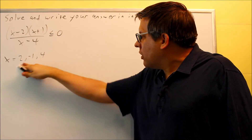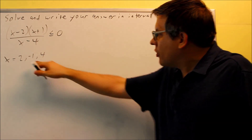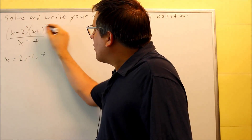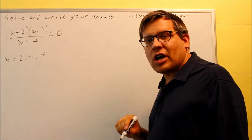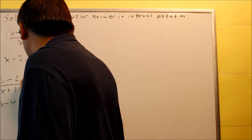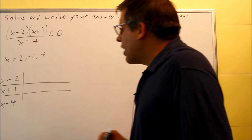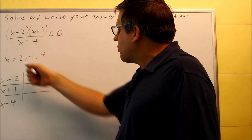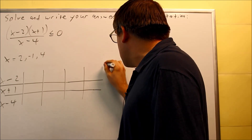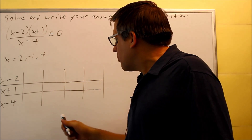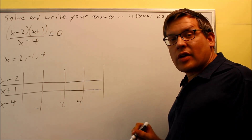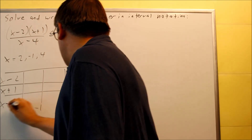It doesn't matter if it makes the top zero or the bottom zero — you're going to include all of them. This tells us what numbers we're going to put on our table, and these would also be the same numbers we'd put on our number line. For the table method, we put any factor you see — top or bottom — on the table: x minus 2, x plus 1, and x minus 4. We put those numbers in order from smallest to largest: negative 1, 2, and 4. We always make one more column beyond the last number.